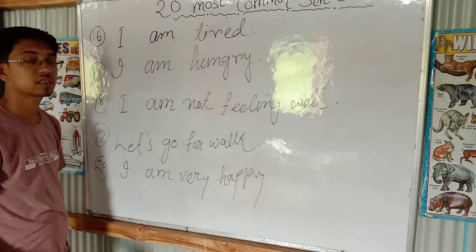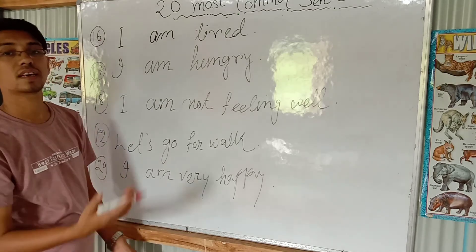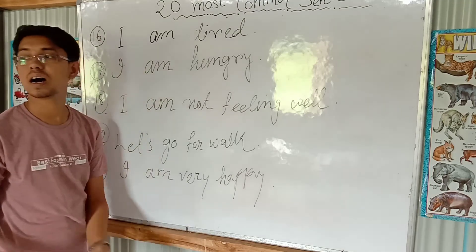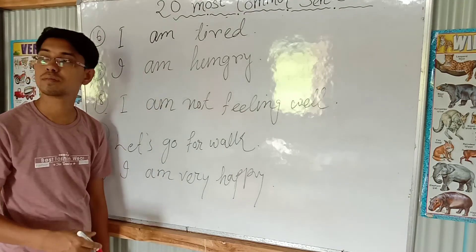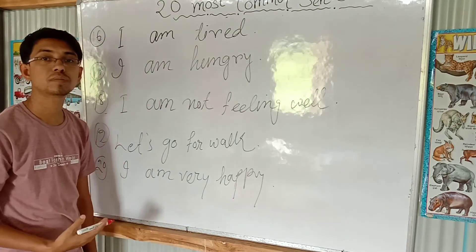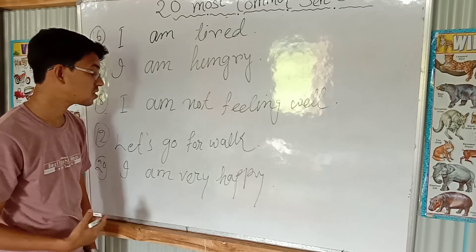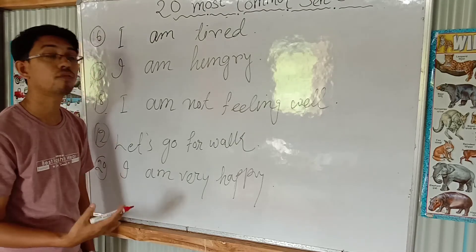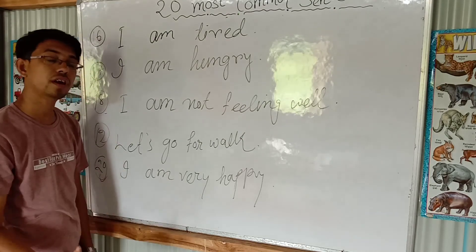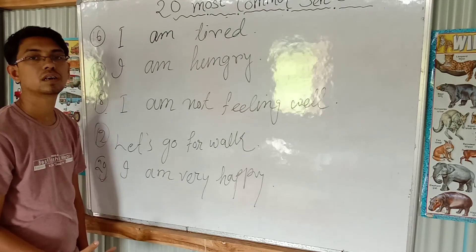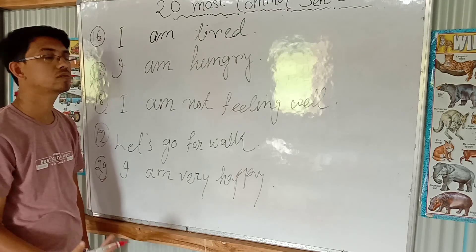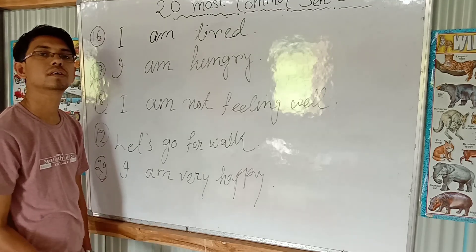Let's go for work. Let's go for work. How do you say it in English? Let's go for work. I am very happy. I am very happy.